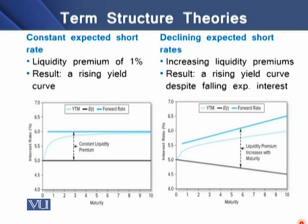Now we can see how yields to maturity relate to expected rates of return and forward rates. In the left panel, we have a constant expected short rate shown as the thick black line. There is a liquidity premium of 1% which is constant between the thick blue and thick black lines. The result is a rising yield curve in this particular case.